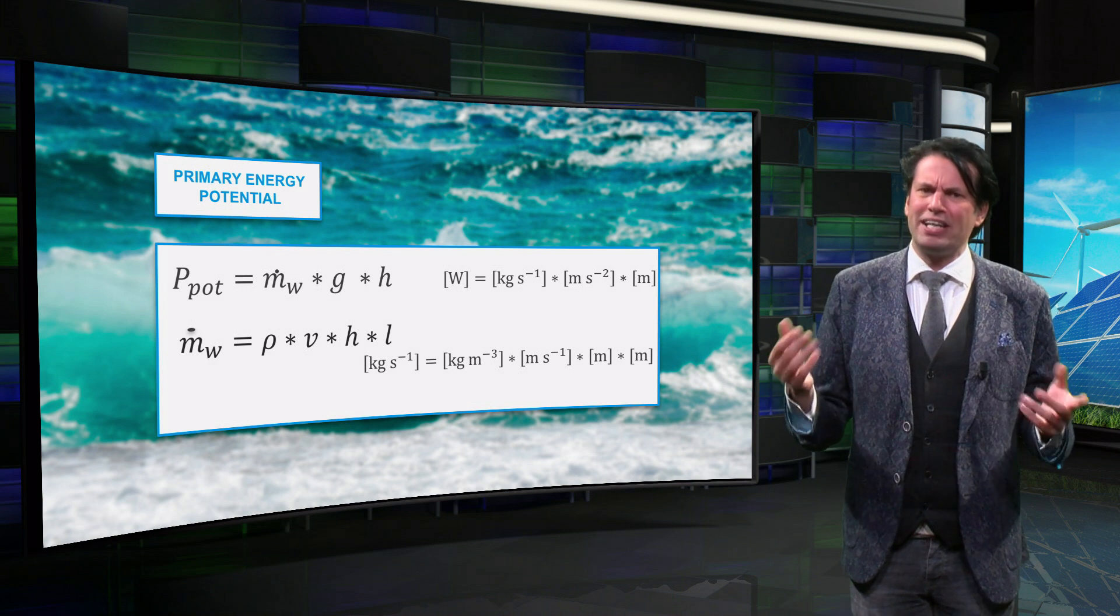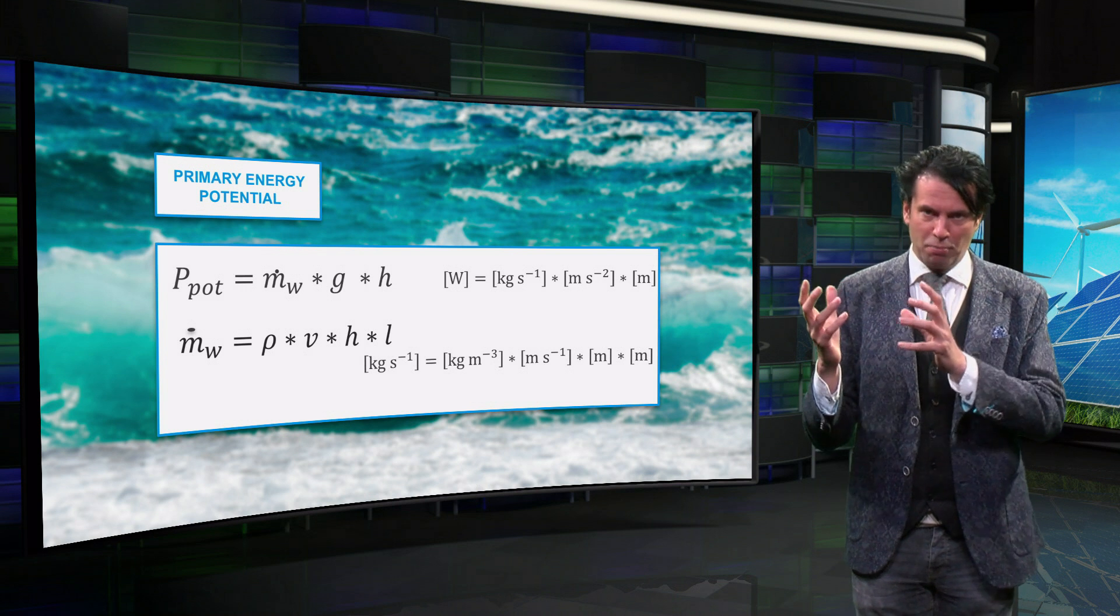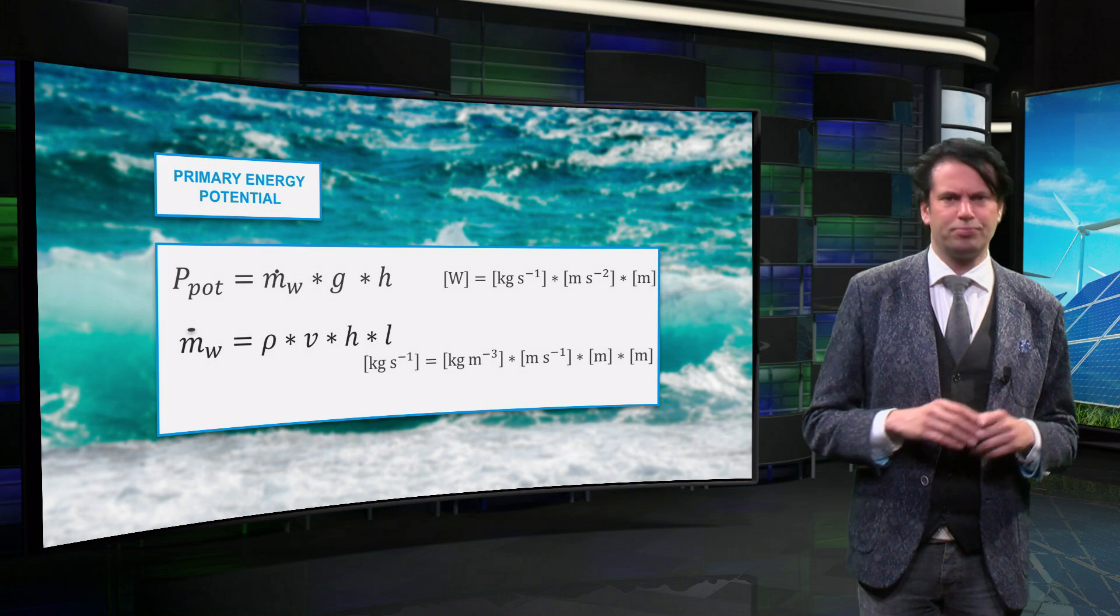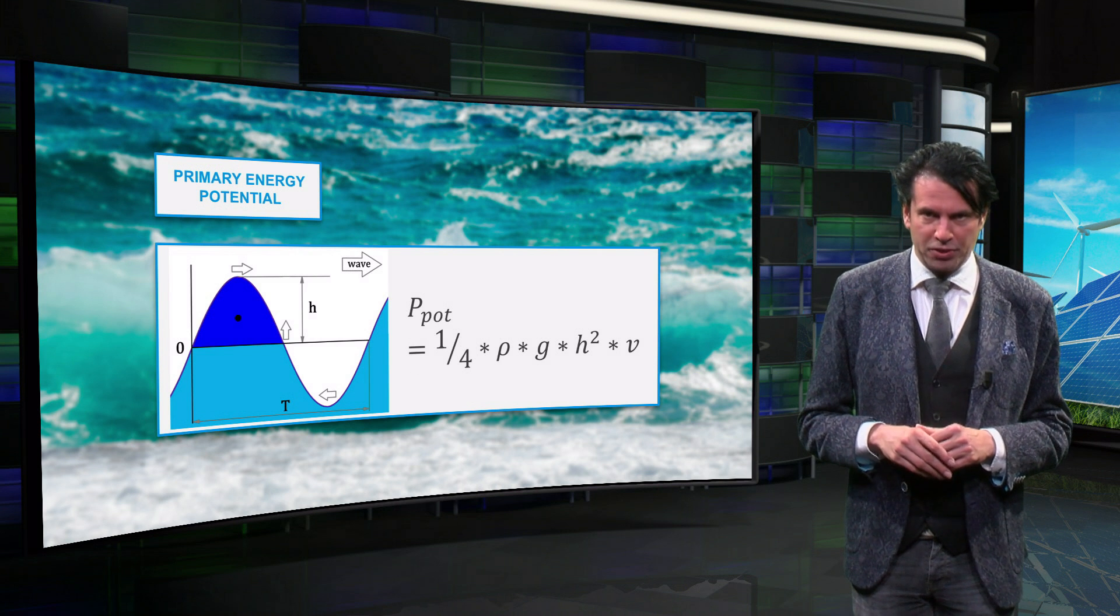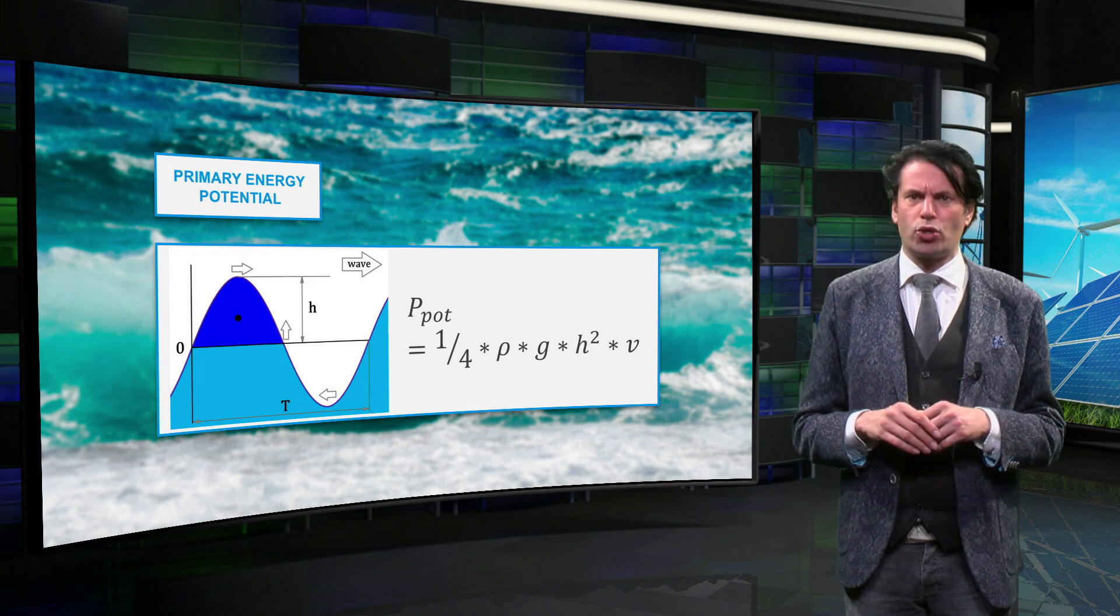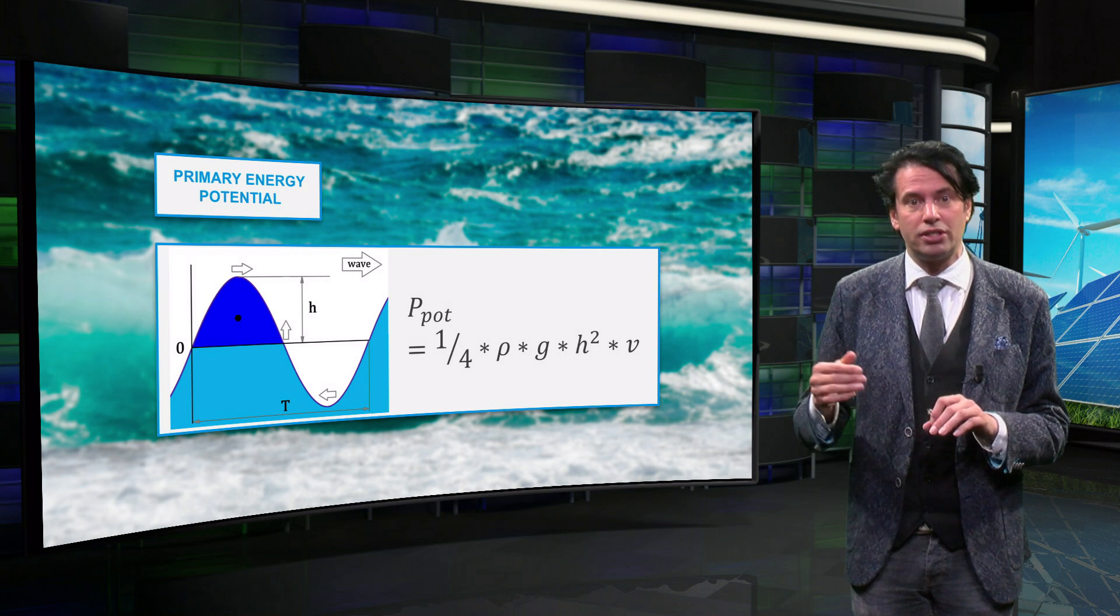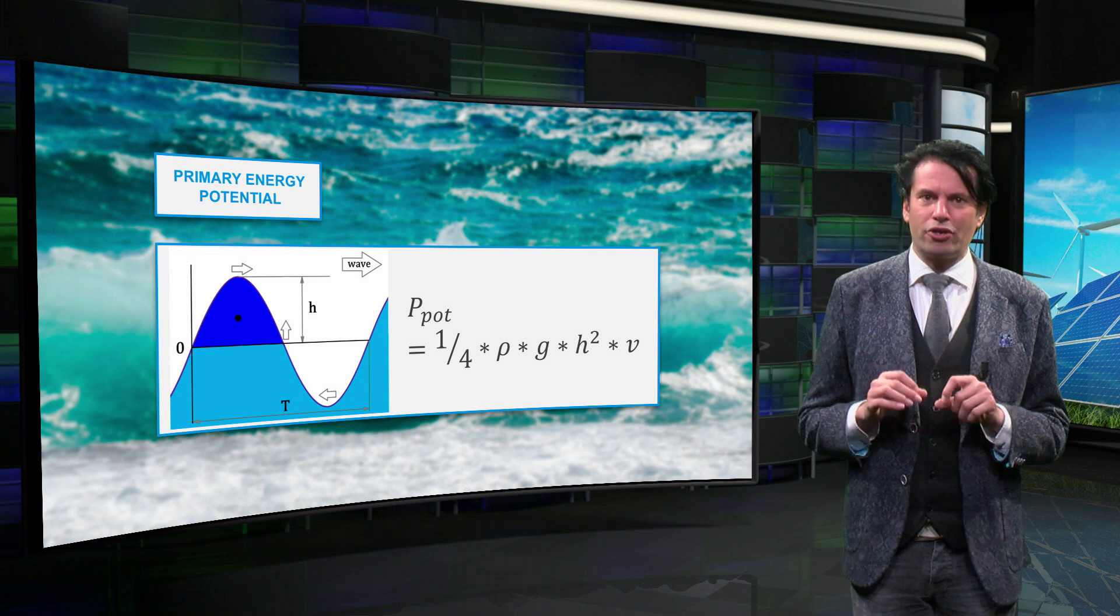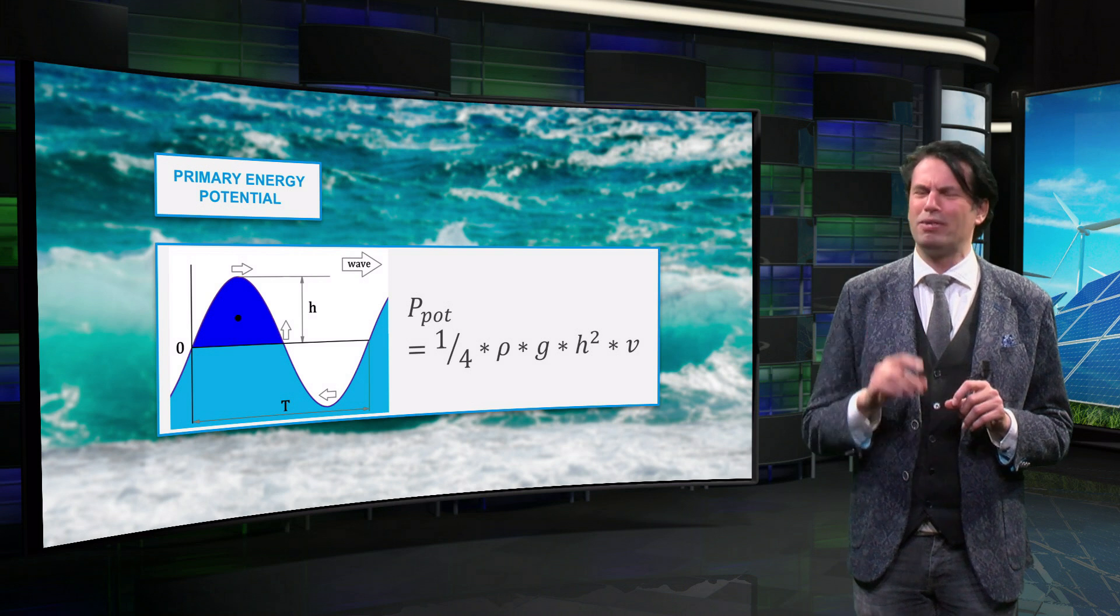However, since l depends on the length of the device that converts the energy, it is common to depict the primary potential of the wave as power per unit length. We can now obtain the following expression for the primary power potential per unit length. This power, which is equal to the kinetic power, is a quarter of the density multiplied by the gravitational constant, the height difference squared, and the horizontal velocity. I strongly encourage you to derive this formula for yourself and see if you come up with the same equation.